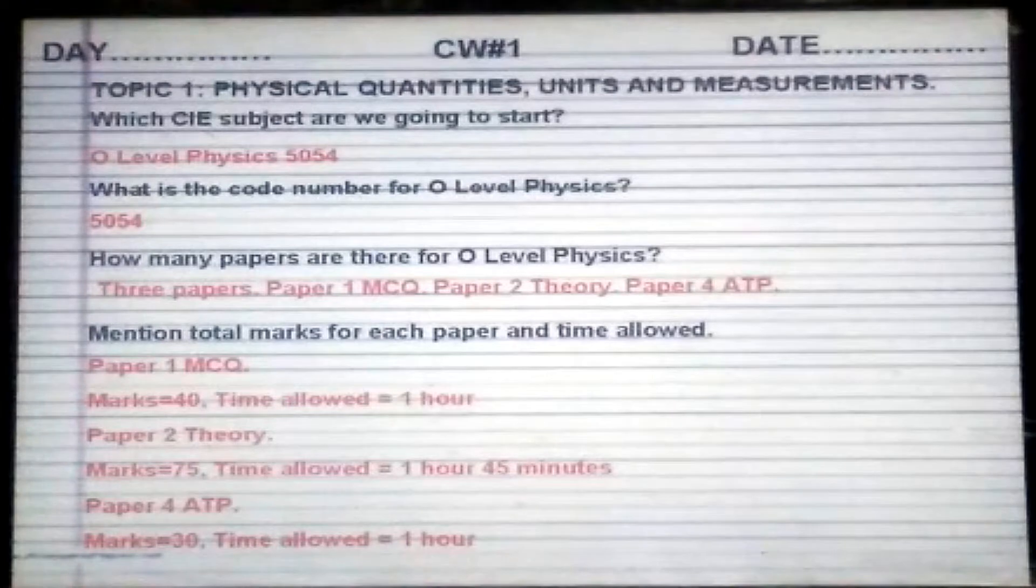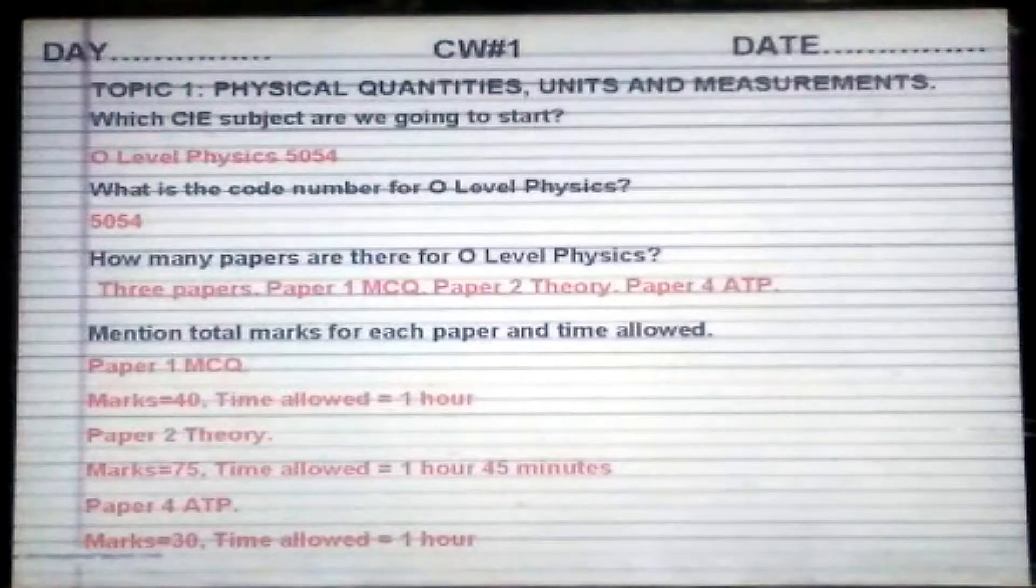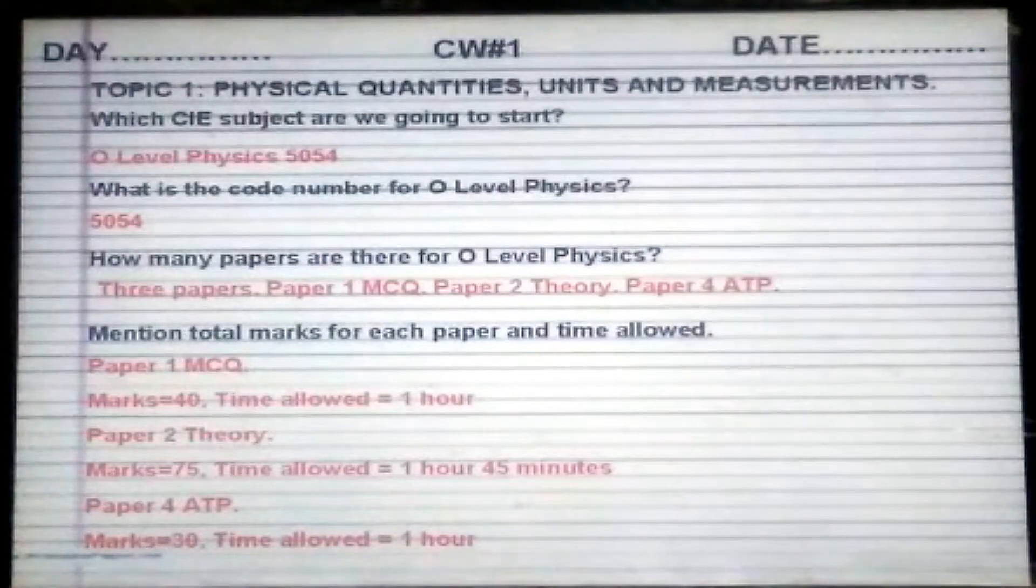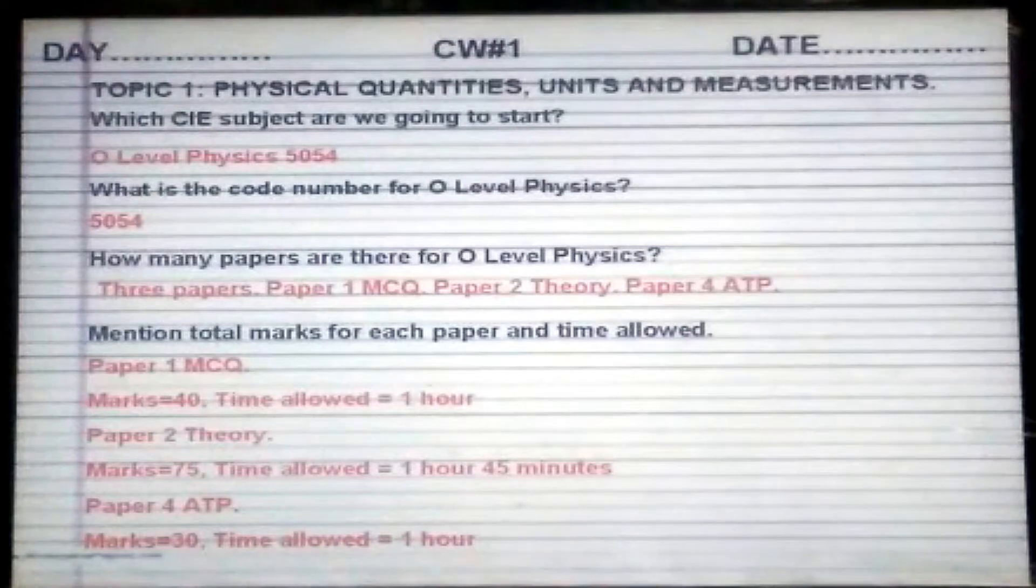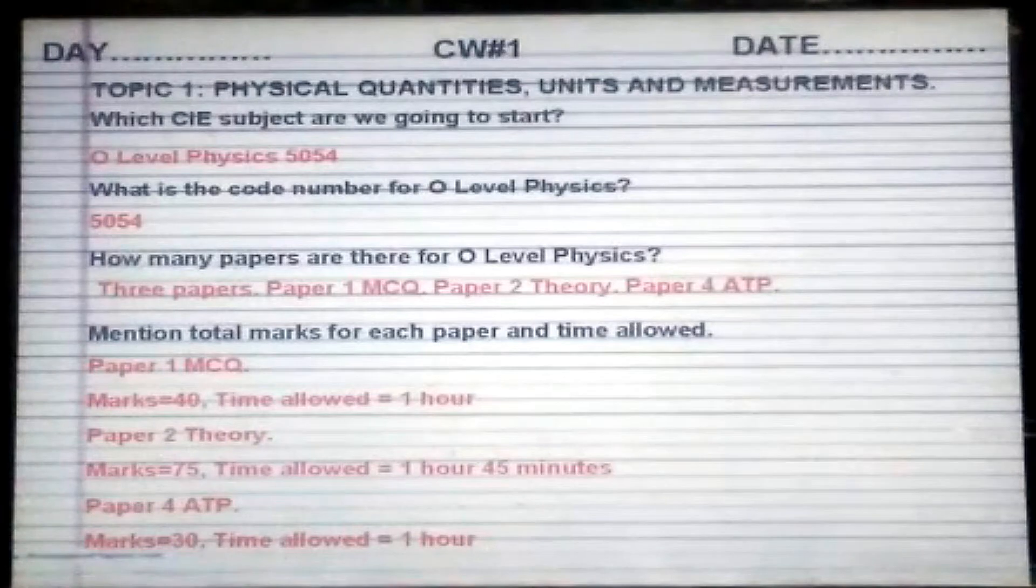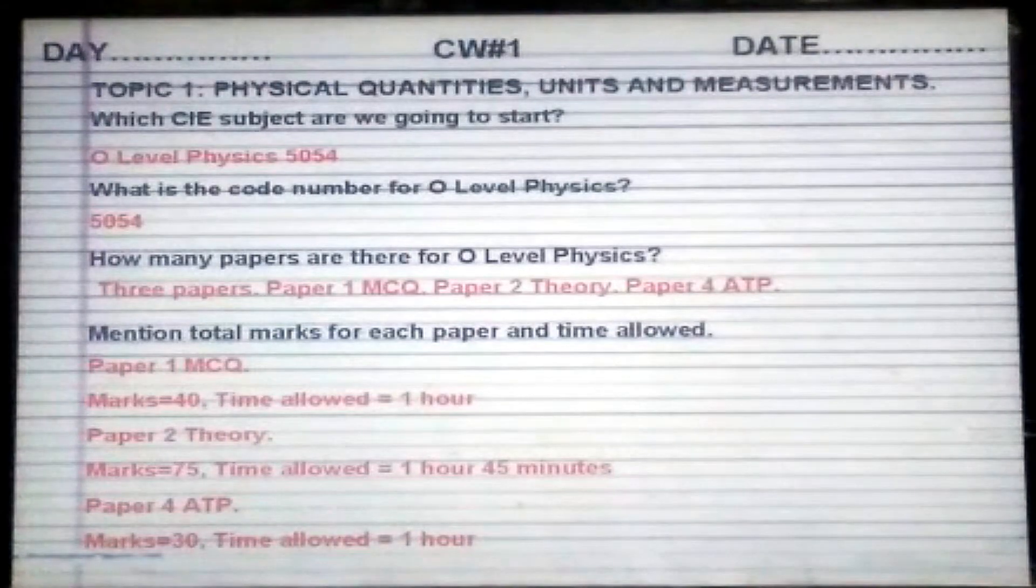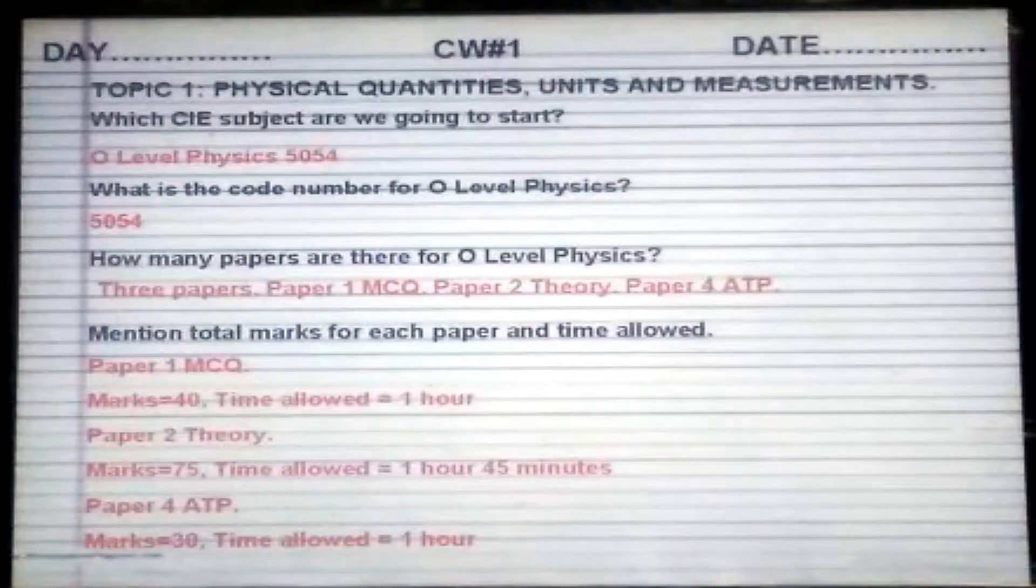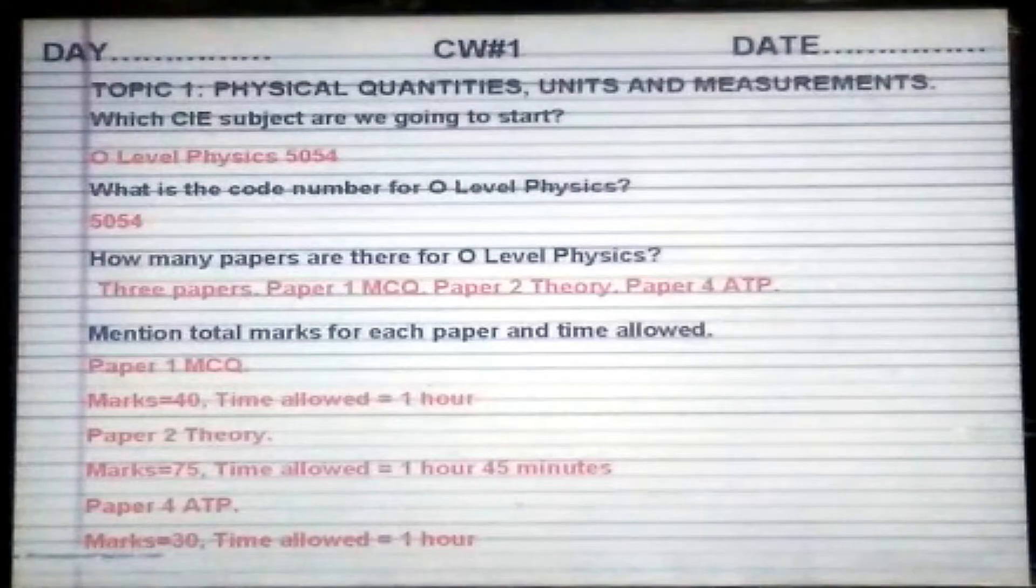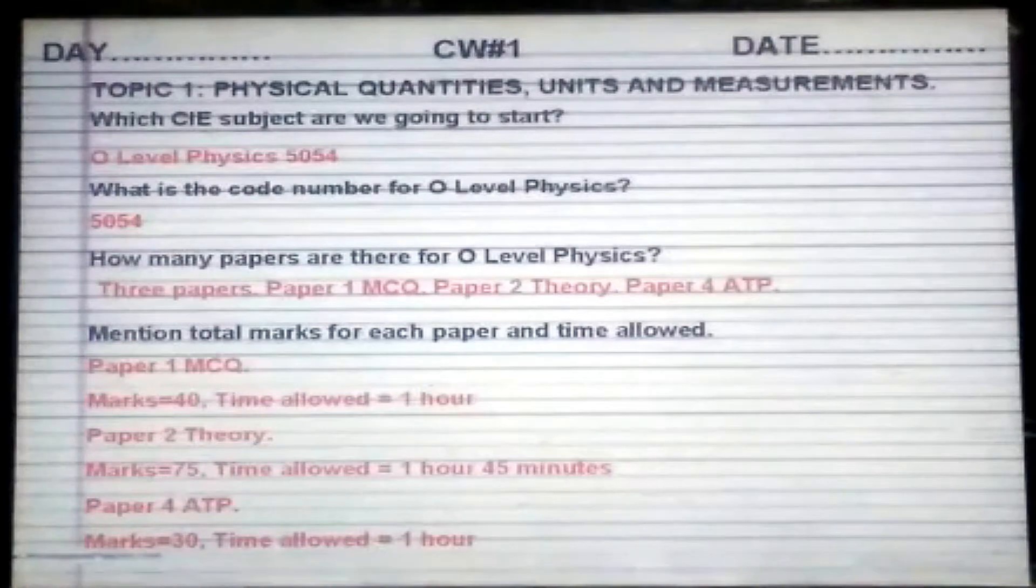Then title of the topic: Topic number 1, physical quantities, units and measurements. All this information was shared with you in one video, so I am just telling you how to write in a new copy. After writing the title, your first question in the previous video was: Which CIE subject are we going to start? Obviously the answer is O Level Physics 5054. What is the code number for O Level Physics? How many papers are there? Mention total marks for each paper and time allowed.